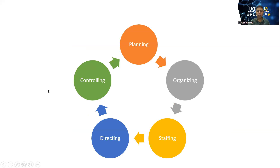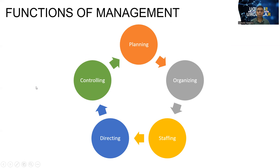When we talk about management, there are five functions. Those five functions you can now see on the screen: planning, organizing, staffing, directing, and control. The management process actually includes planning activities, organizing related activities, staffing related activities, directing and leading, and also controlling activities. Those are the functions of management.